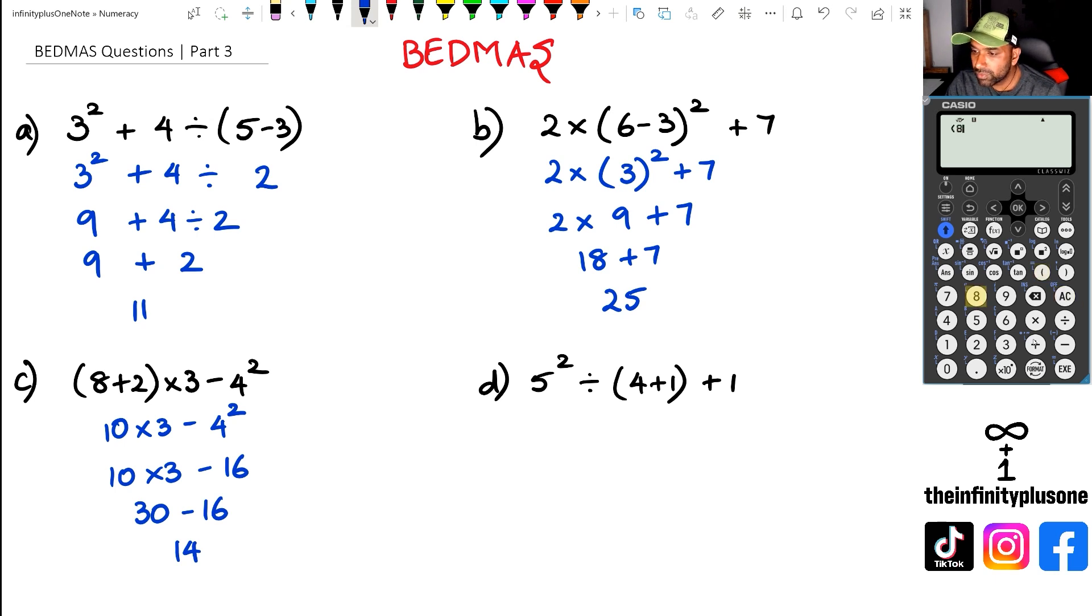Putting this in the calculator, we've got eight plus two, and we're going to do multiplied by three minus four squared, and that's going to give us fourteen. We're happy with that, we can move on.